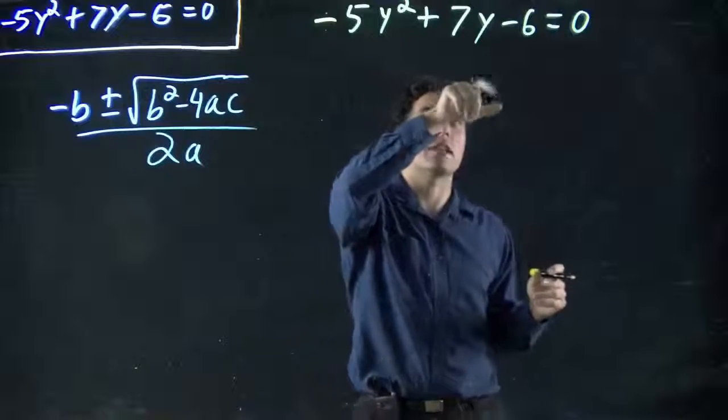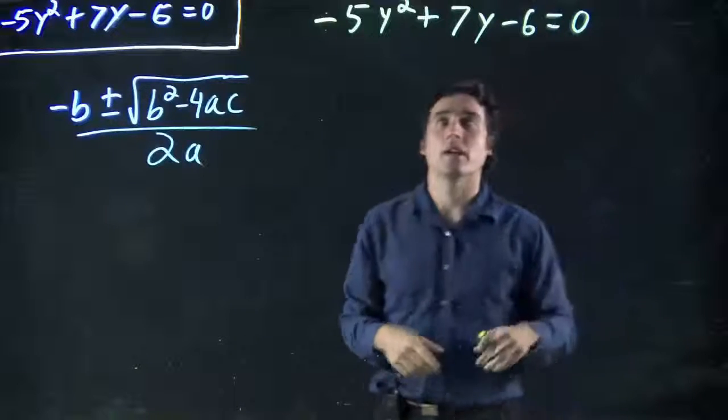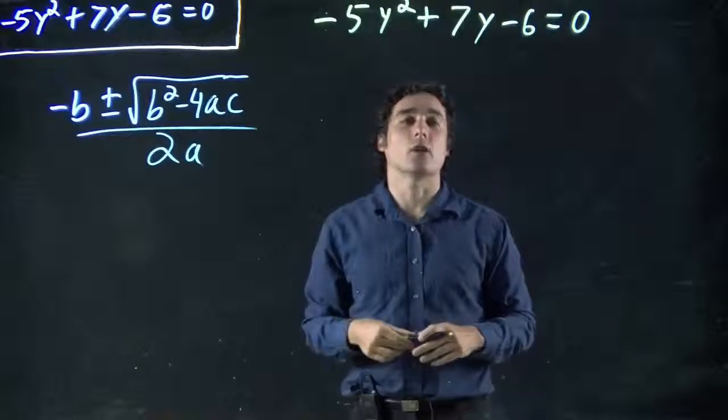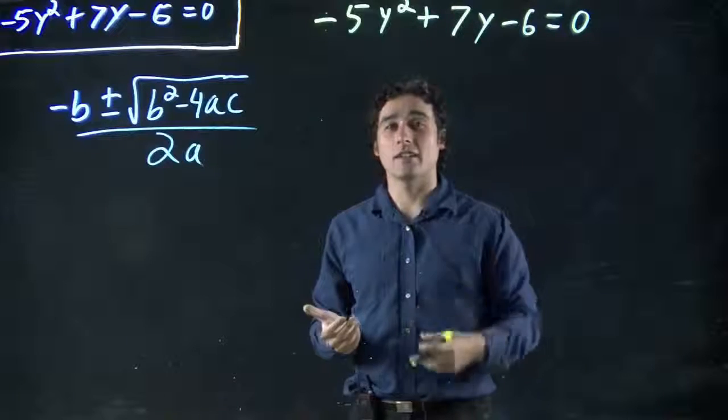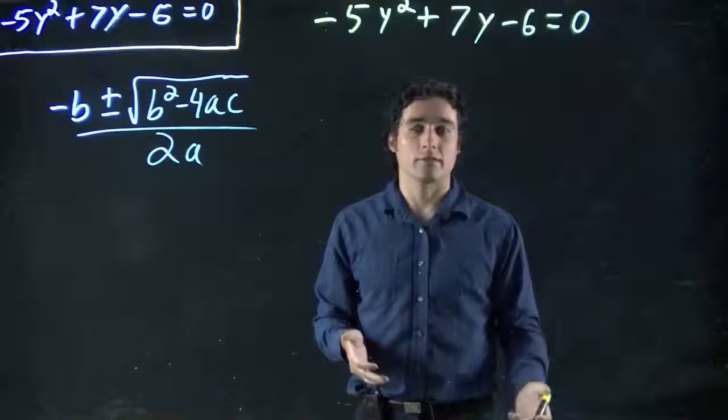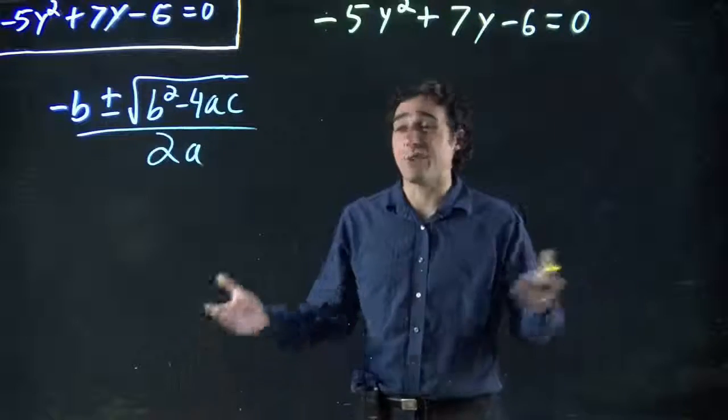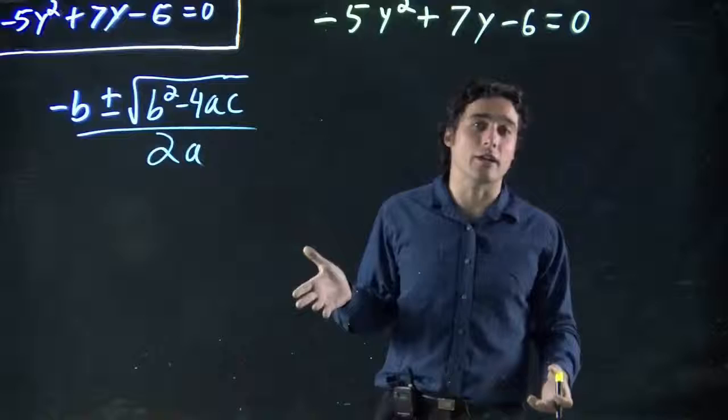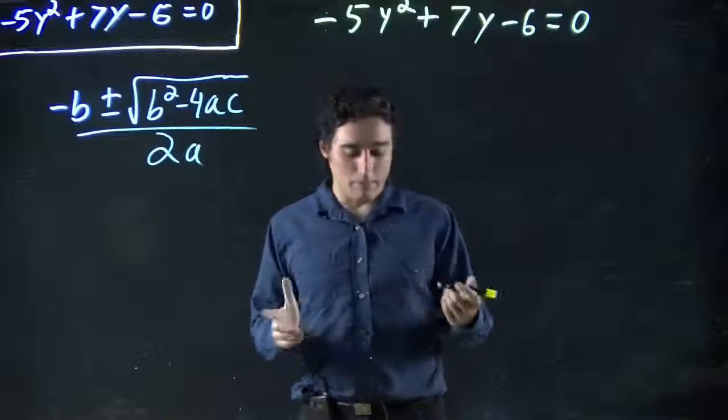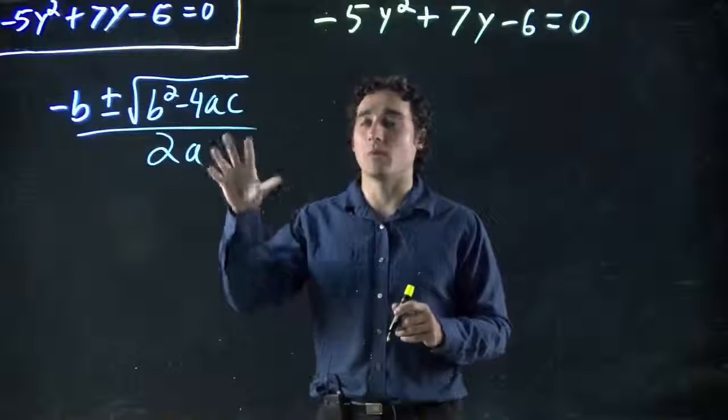So minus 5y squared plus 7y minus 6 equals zero. And again, we could look at trying to factor this if we wanted to. If we tried, we'd find it didn't work. So we'd be stuck going, okay, now what? Ah, good old quadratic equation. Or again, if you don't like factoring, you might just jump to quadratic right away. It's a little bit messy looking sometimes, but it works.